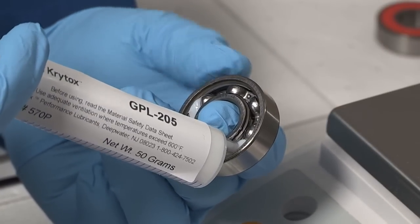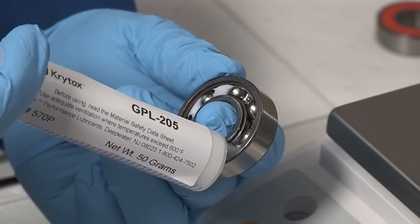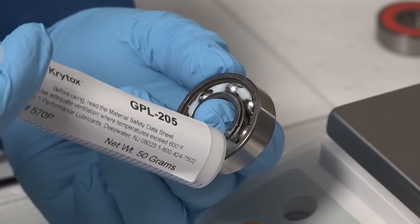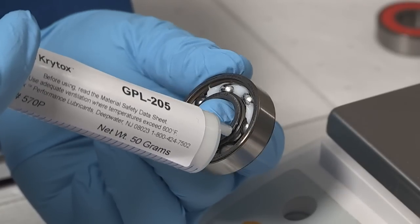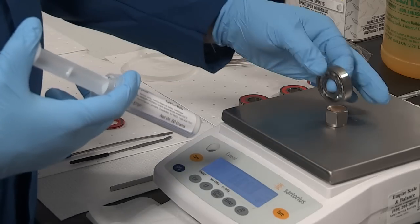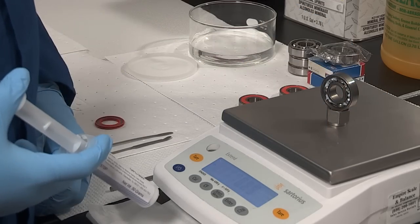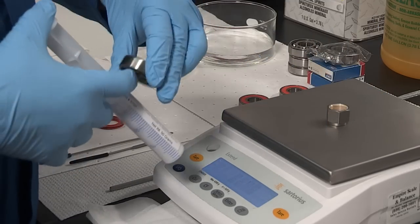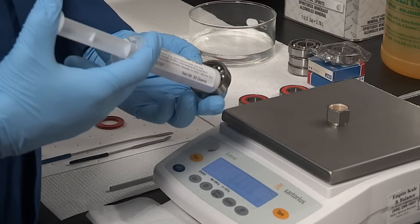Then inject grease onto the outer race between the rolling elements and repeat on the other side of the bearing. When completed, rotate the bearing slowly by hand to spread and distribute the lubricant. Apply enough thrust by hand to cause the rolling elements to rotate. Weigh the bearing again to ensure the proper weight.